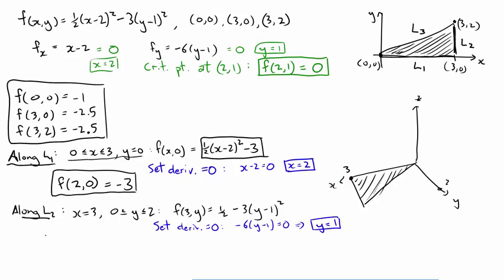So now we evaluate the function when x is 3 and y is equal to 1. And when you evaluate, you get f at 3 and 1 is 1 half. Aha! Our previous biggest number in our list was 0. But now we found that the function can actually take on a higher value, 1 half, at the point 3, 1. We still have one line left to do.